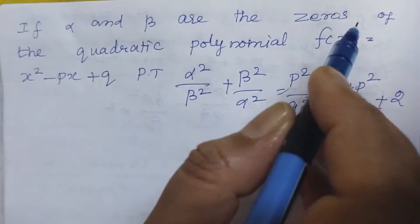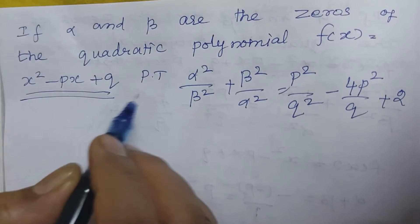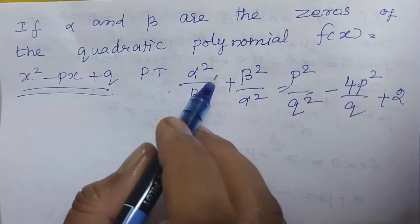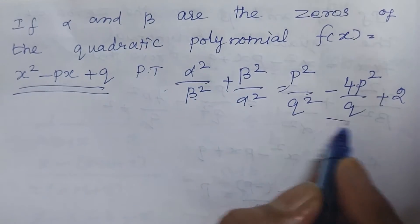If alpha and beta are the zeros of the quadratic polynomial x square minus px plus q, then prove that alpha square by beta square plus beta square by alpha square equal to this one.